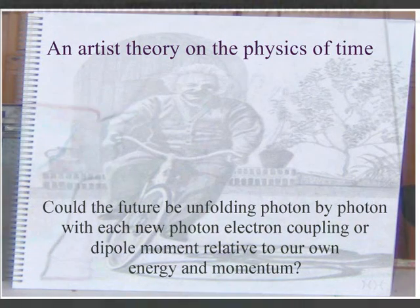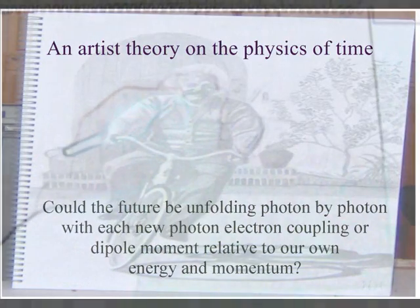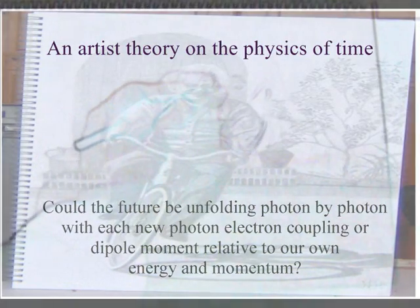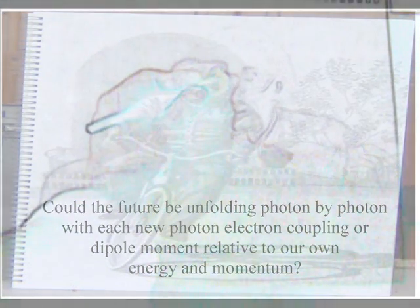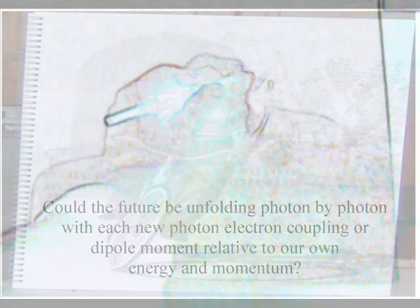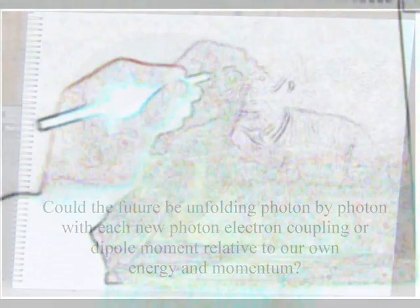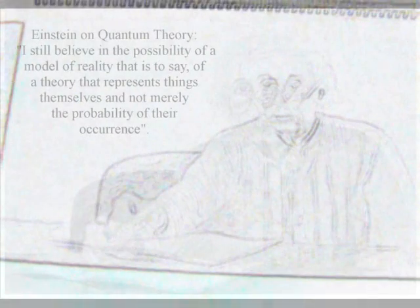This video explains an interactive quantum theory with the atoms of the periodic table interacting with the wave-particle duality of light. Light is a wave and we only have the particle or photon characteristics when it interacts with the electrons of the atoms.